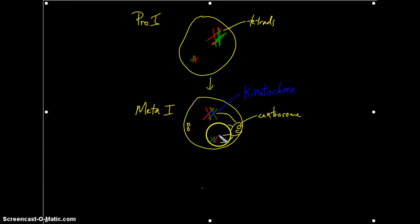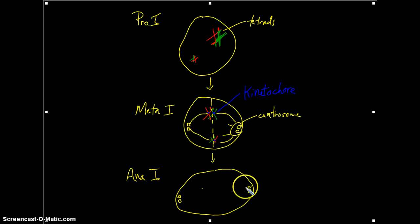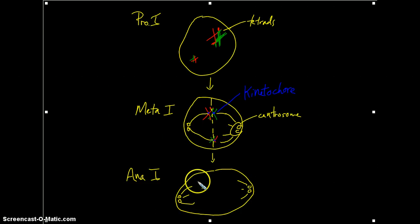So you have microtubules connecting to the kinetochore, so these chromosomes brings them into alignment along the metaphase plate. And eventually, during anaphase one, the homologous chromosomes will be separated. So you have the motor proteins by the kinetochores begin to walk the chromosomes toward the poles here. So you have the shortening of the microtubules occurring.